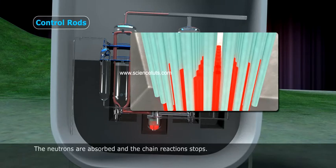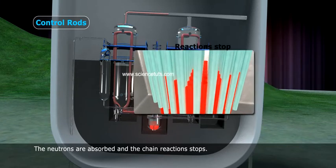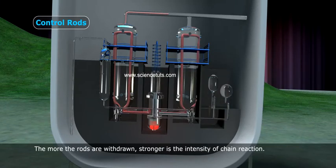The more the rods are withdrawn, stronger is the intensity of chain reaction. Five, coolant: It is a material which is used to absorb heat generated in chain reaction.